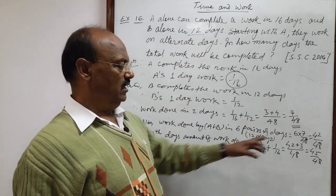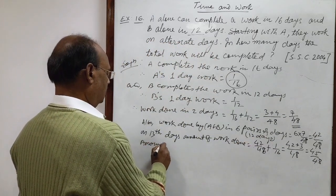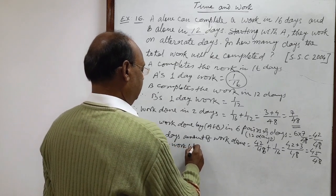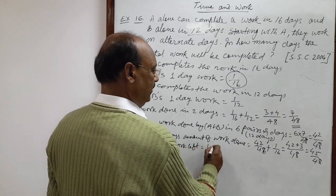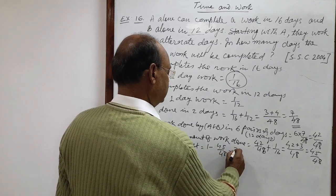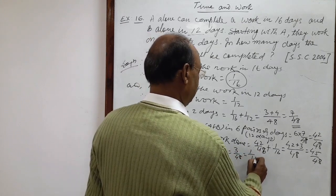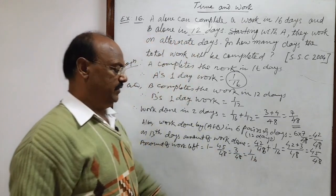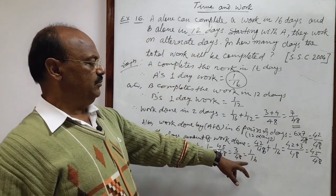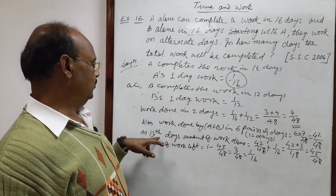And how much work is left? Amount of work left is equal to 1 minus 45/48. This is equal to 3/48, this is equal to 1/16 work that has been left. And this 1/16 work which is left will be done by now B, because A has done his work on 13th day.